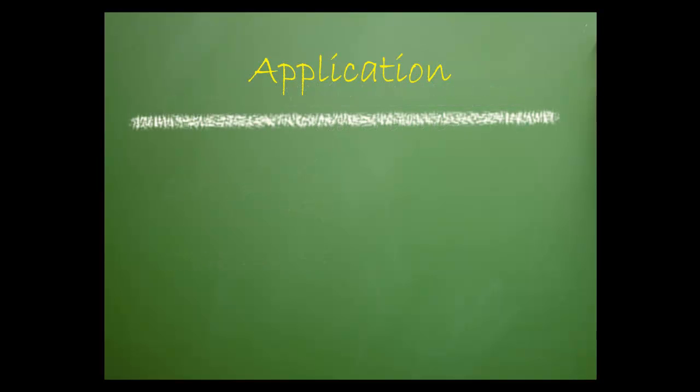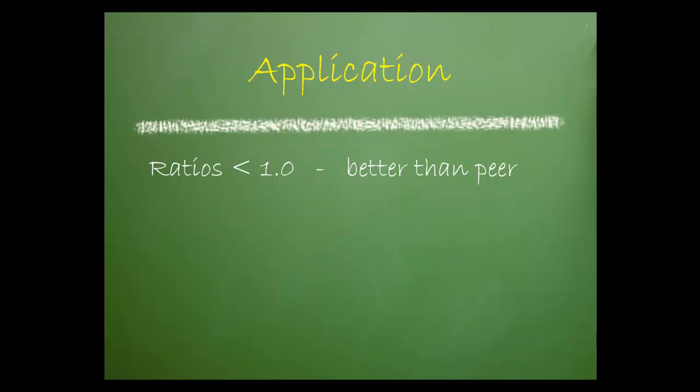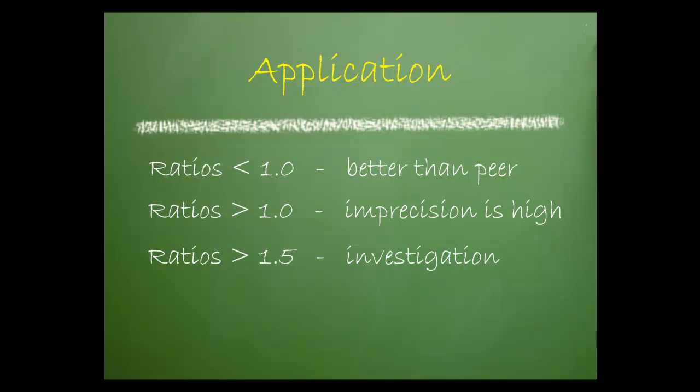What does all this mean? Well, any ratio that's less than 1 indicates that precision is better than the peer group. A score greater than 1 indicates that imprecision is larger. Ratios greater than 1.5 indicate a need to investigate the cause of the imprecision. And any ratio greater than 2 usually indicates a need for troubleshooting and or corrective action. Something in the test system is causing an increased imprecision and the patient results may not be entirely reliable.